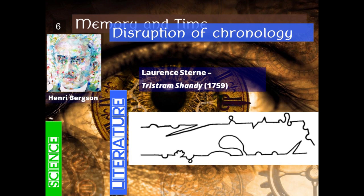Tristram Shandy suggests that it's impossible to have a novel that only consists of linear progression — moving from point A to point B. Instead, we have to keep in mind that there are digressions: many of them the result of memory, some the result of associations, some just daydreaming or anticipations. A good artist should design their work consisting not just of the straight line of progression, but also of all the meanders of digression.